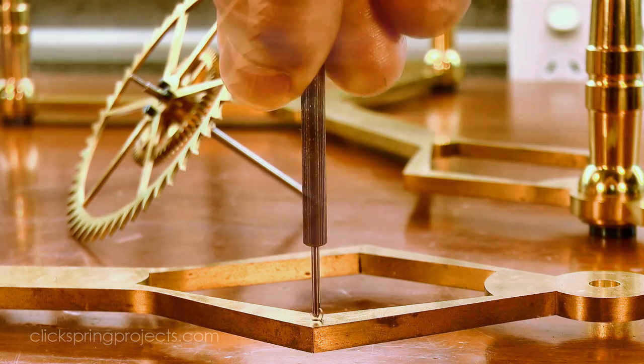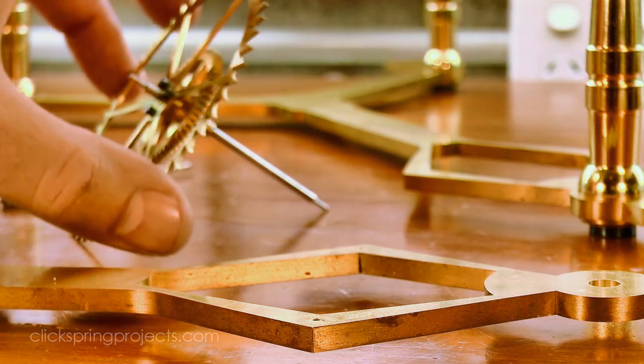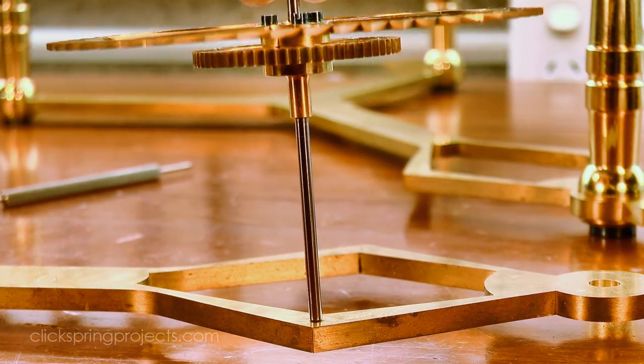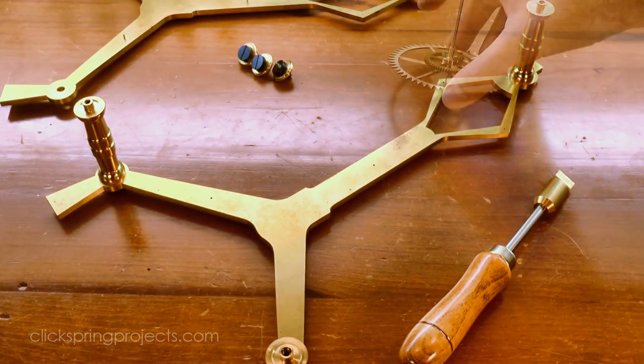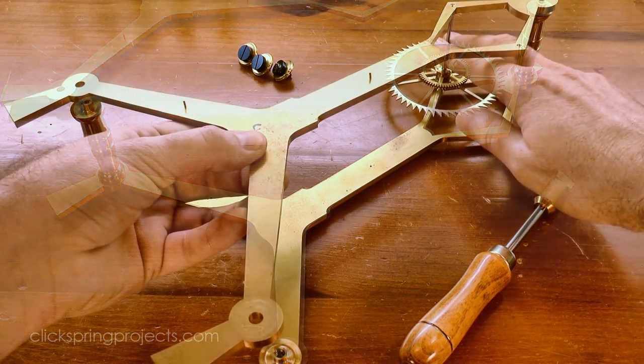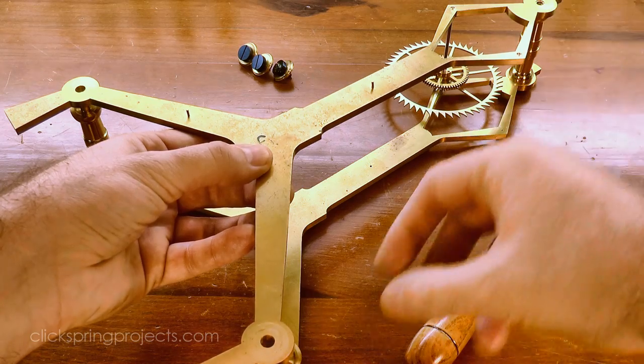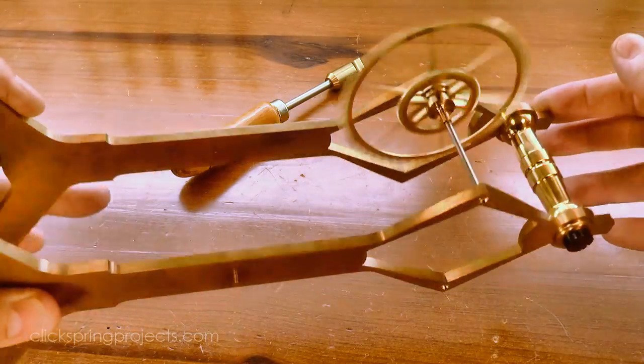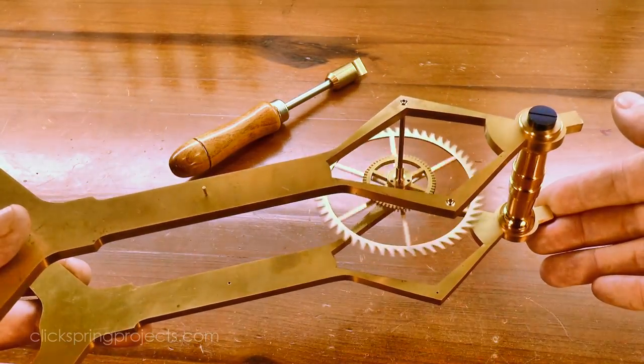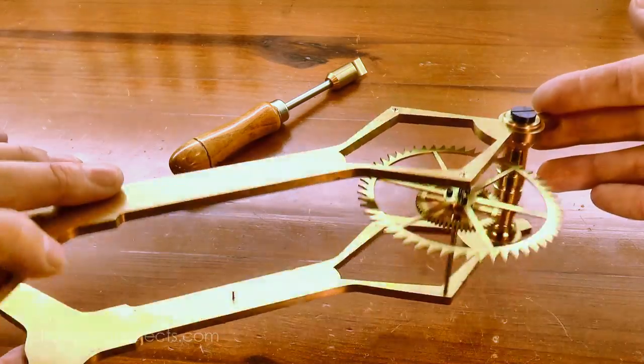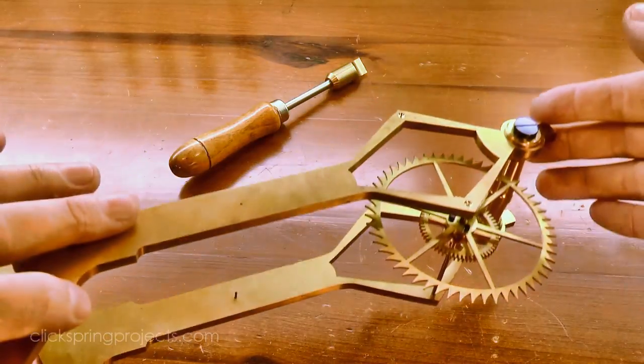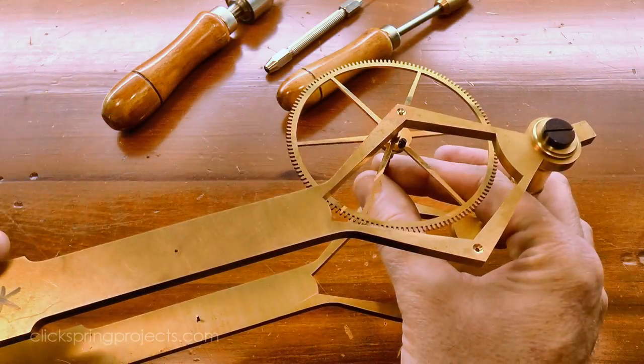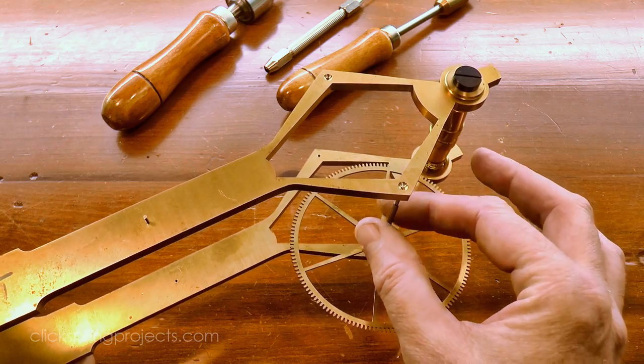Many clockmakers use a rule of thumb that says if the arbor can tilt about 5 degrees off its axis all around the hole, then the pivot hole has the required freedom, so that's what I'm aiming for here. Once it looked about right, I gave it a test in the frames to see how it ran. It's coasting gently to a stop, and there's a nice click as the frames are tilted from side to side. That click is an indication of what clockmakers call end shake, another required clearance between the arbor shoulders and the plates.